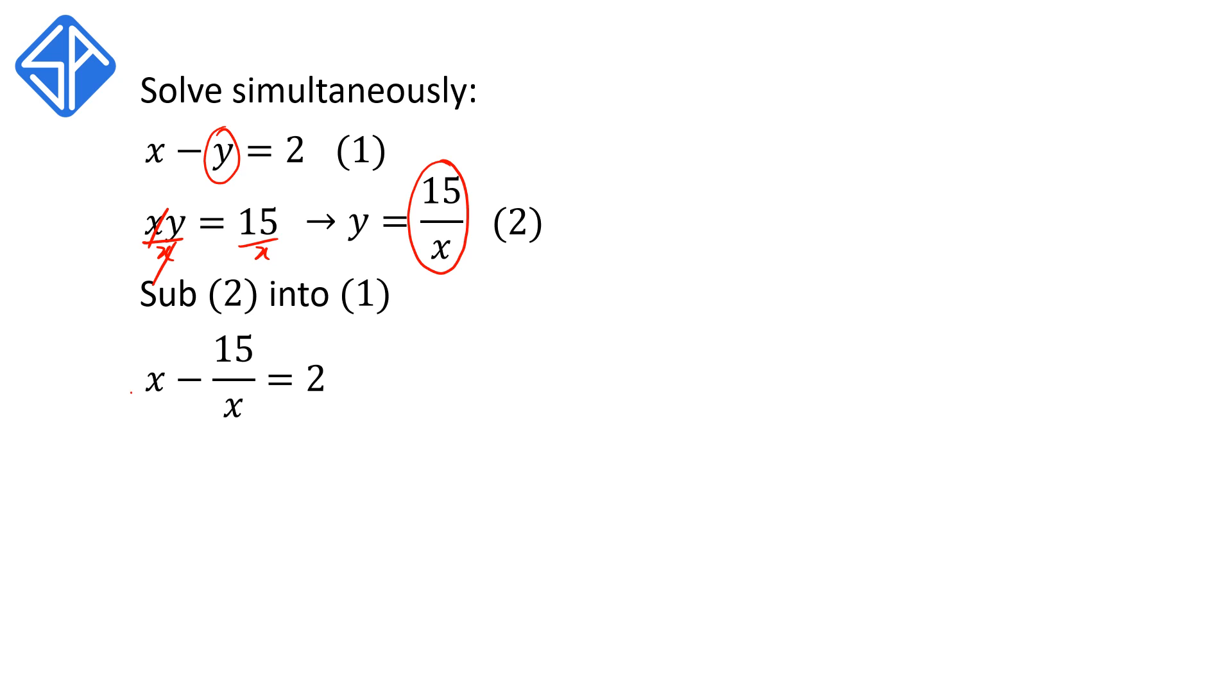To solve this, we first multiply every single term by x. See how the x cancels out. Then when we simplify this, we have x squared minus 15 is equal to 2x.